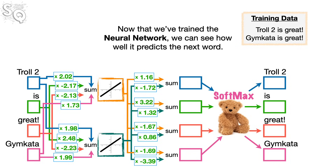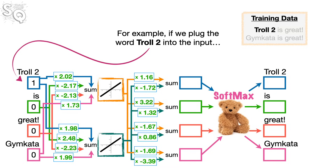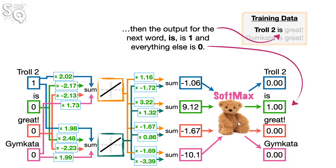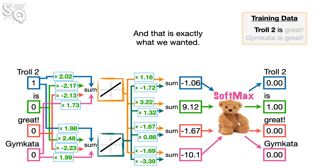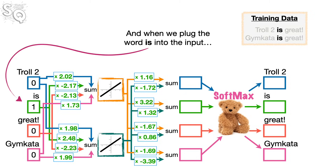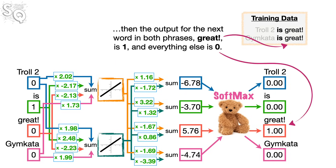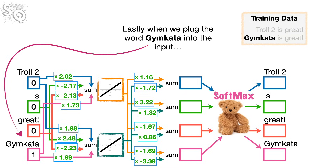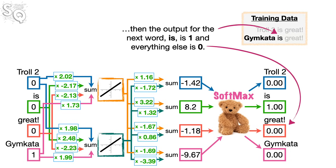Now that we've trained the neural network, we can see how well it predicts the next word. If we plug Troll2 into the input, the output for 'is' is 1 and everything else is 0 — exactly what we wanted. When we plug 'is' into the input, the output for 'great' is 1 and everything else is 0. And when we plug Jimkata in, the output for 'is' is 1 and everything else is 0.